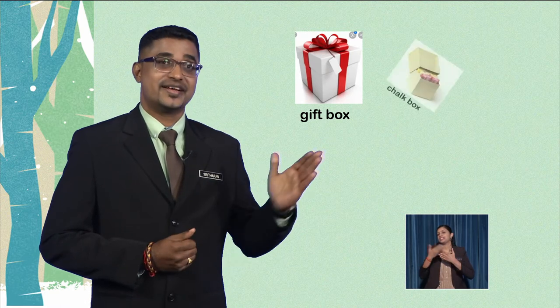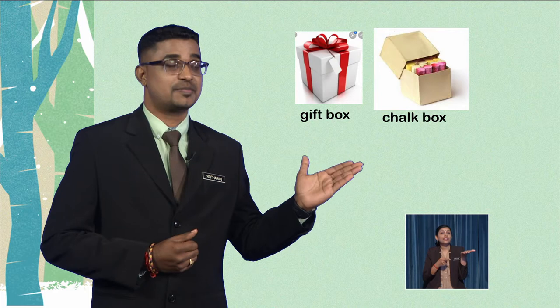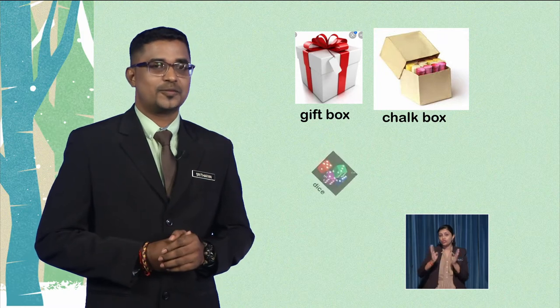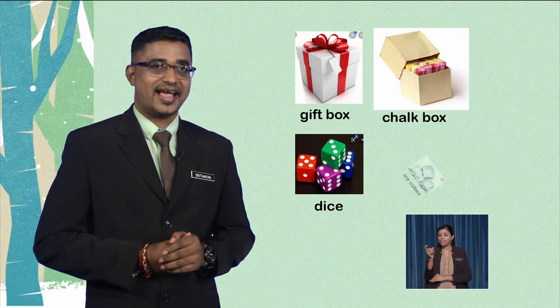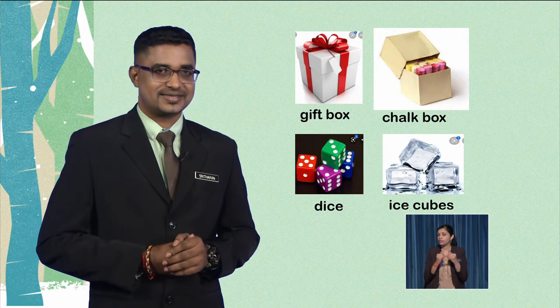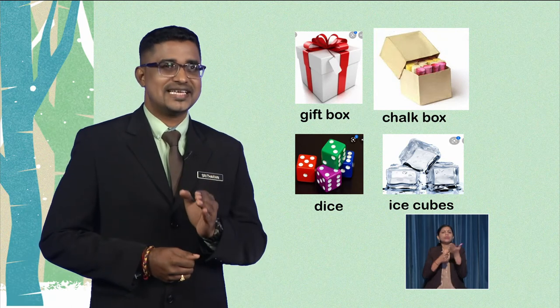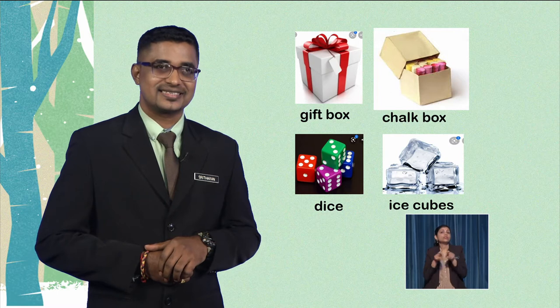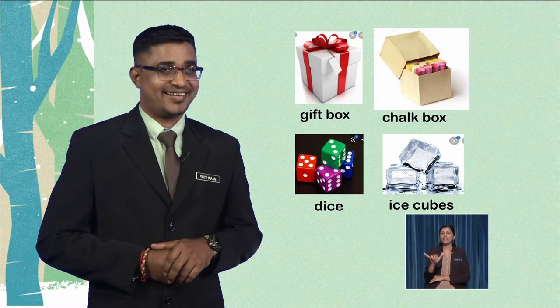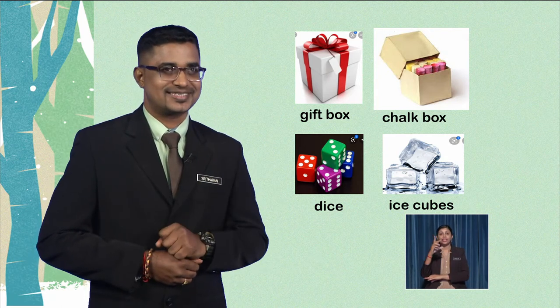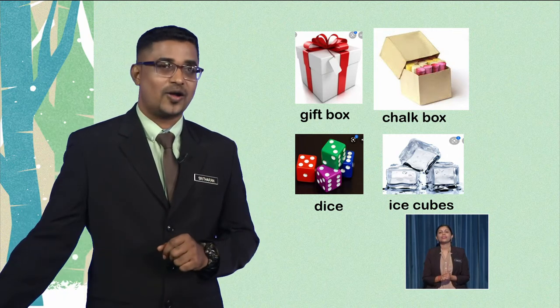Can you identify these objects? Yes, easy right? The first object is a gift box. The next one is a chalk box, followed by a dice, and lastly some ice cubes. Now, can you guess the similarity of these objects? Yes, correct! All the objects are in the same 3D shape. This shape is called a cube.